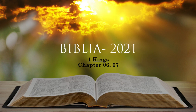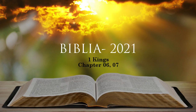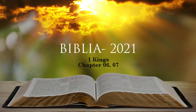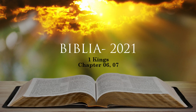The temple that King Solomon built for the Lord was 60 cubits long, 20 wide, and 30 high. The portico at the front of the main hall of the temple extended the width of the temple, i.e. 20 cubits, and projected 10 cubits from the front of the temple.